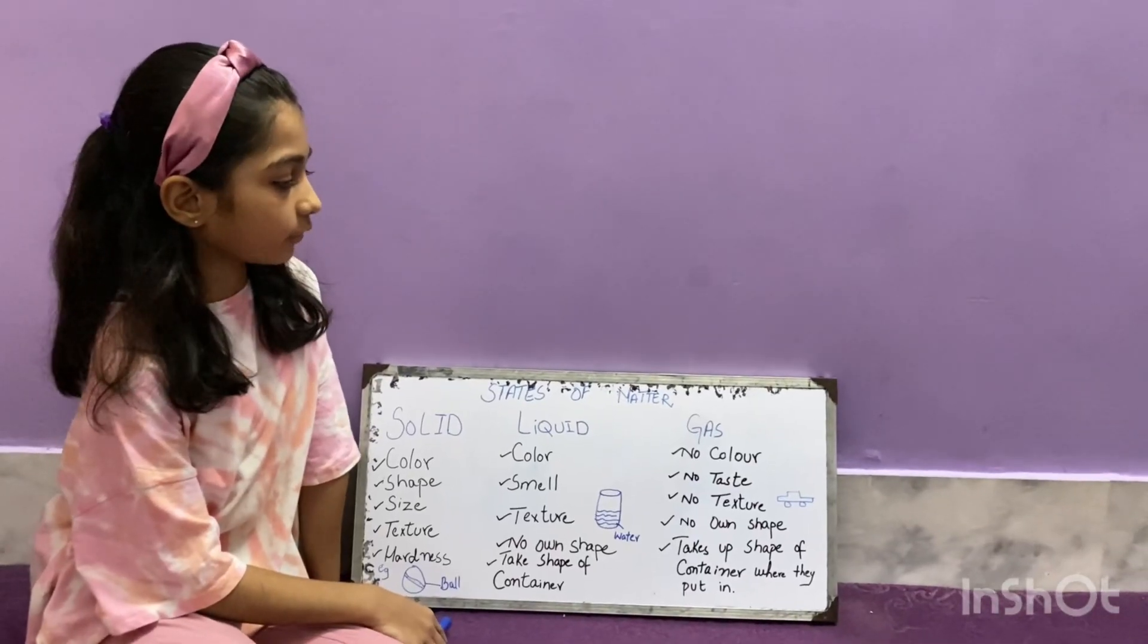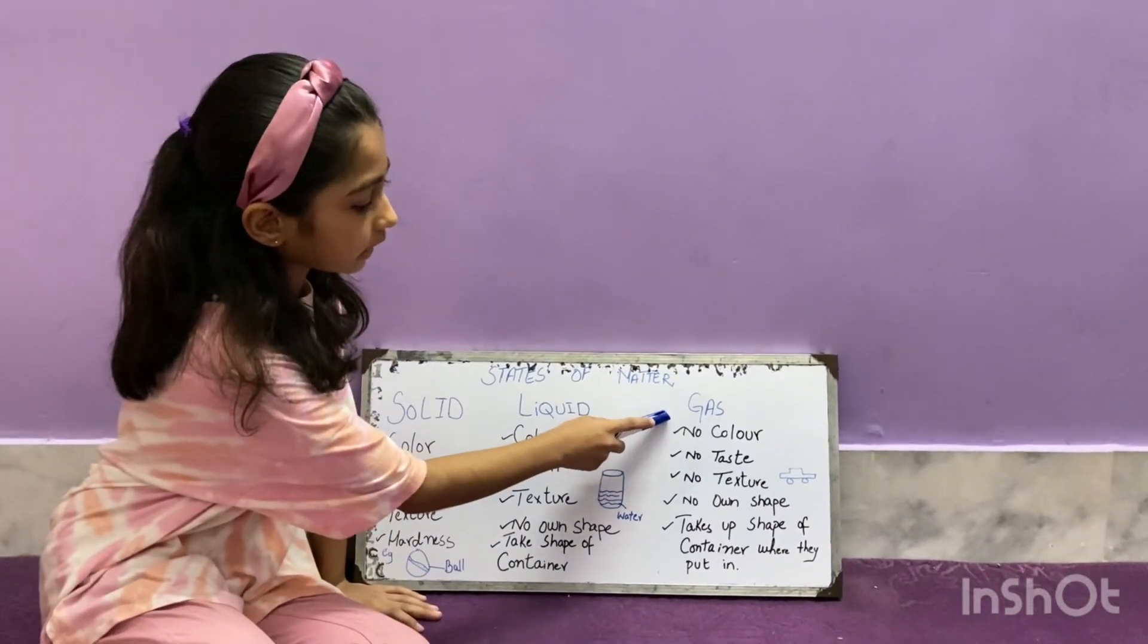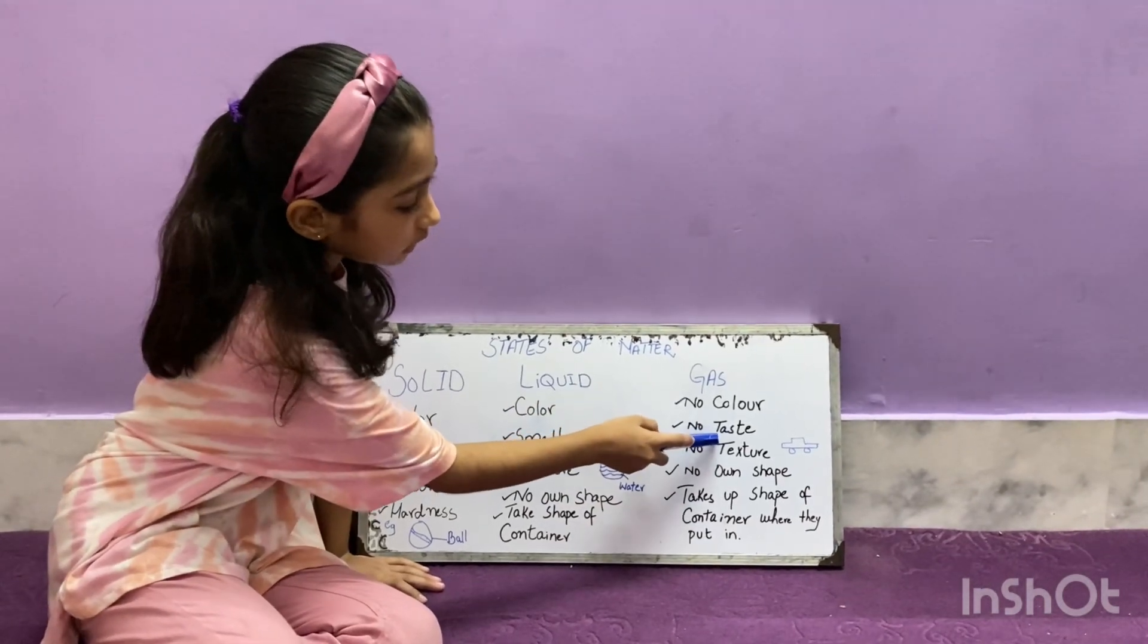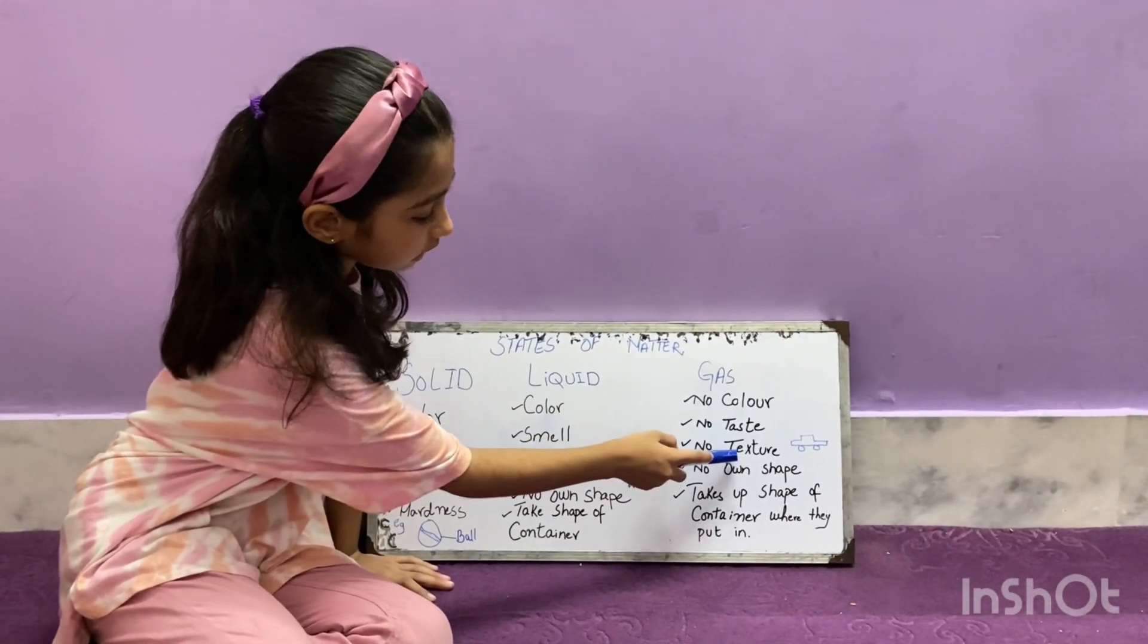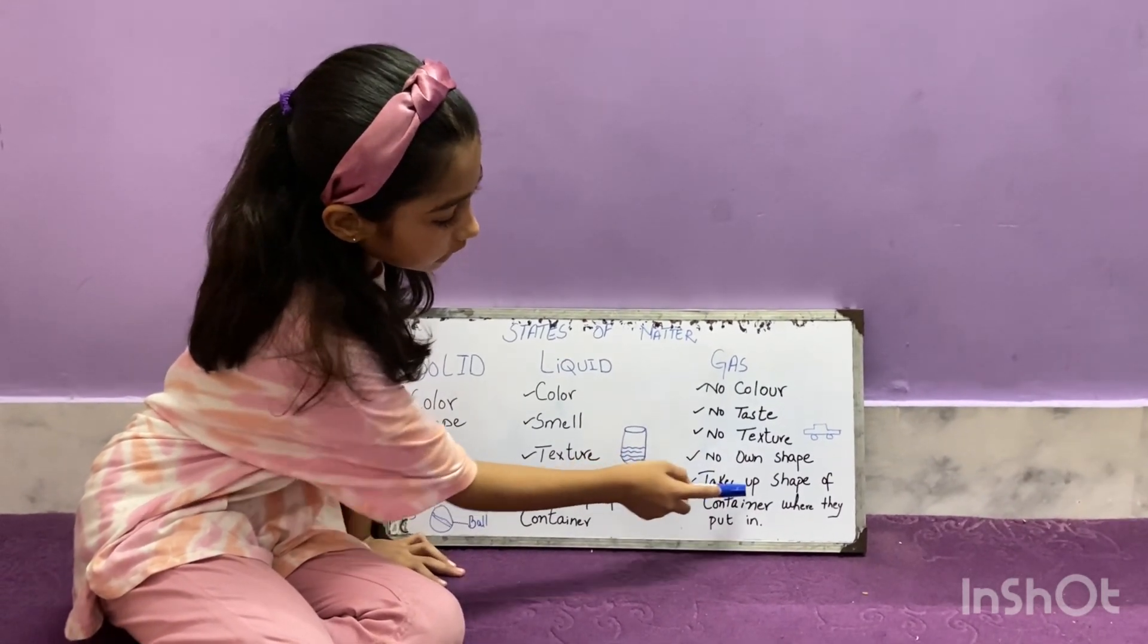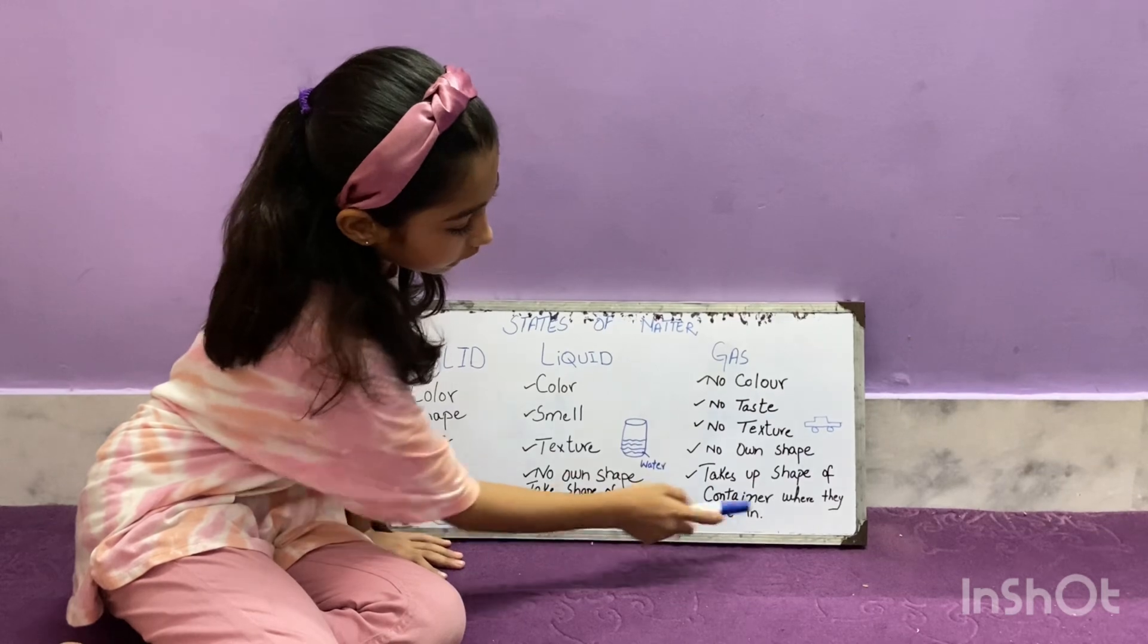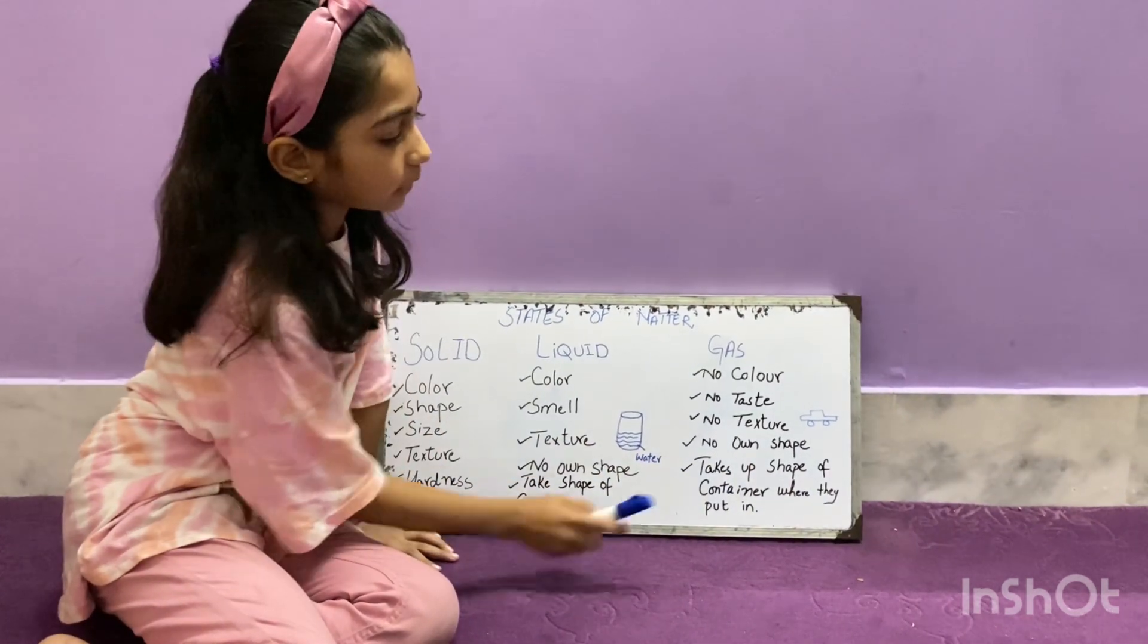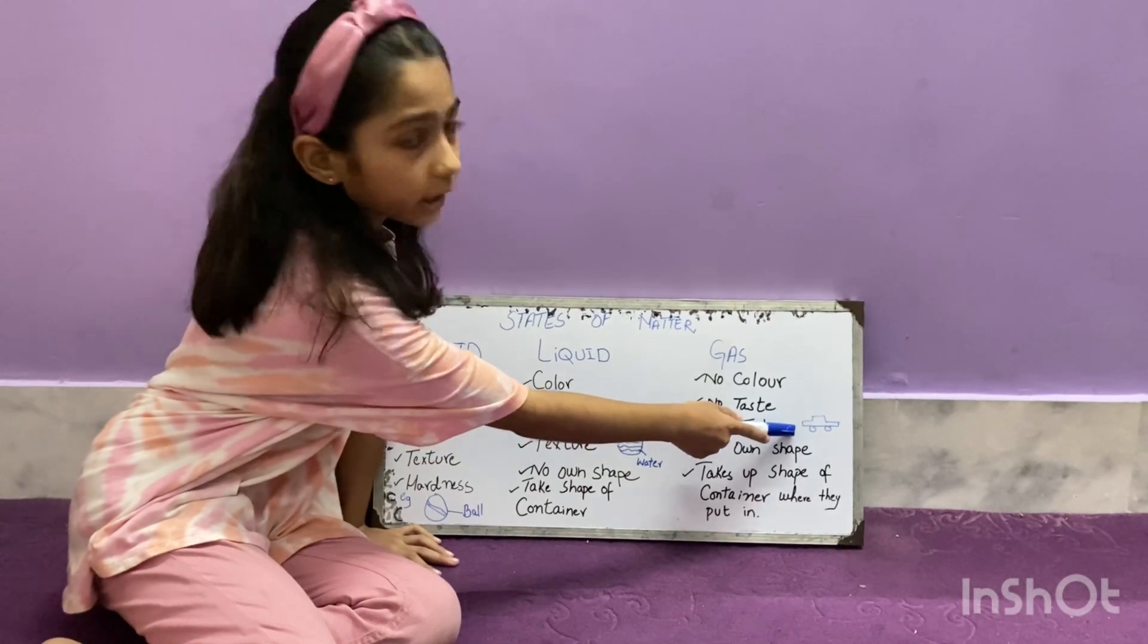Third state of matter: gas. Gas has no color, no taste, no texture, no own shape but takes up shape of container where they put in. Example: car tanker.